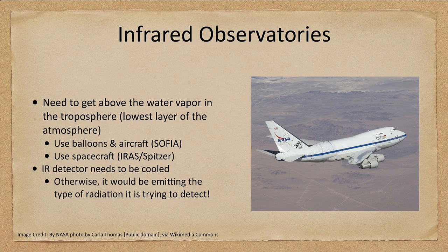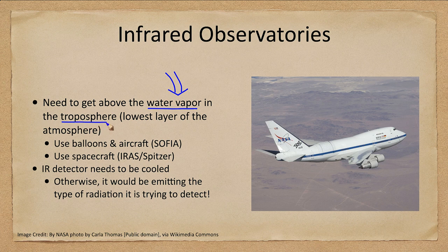Let's look at some infrared observatories. To observe in the infrared, we need to get above water vapor, which is very good at absorbing infrared light. So we need to get above the troposphere, the lowest layer of the atmosphere. This can be done using balloons and aircraft such as SOFIA pictured here, which flies high up in the atmosphere to observe infrared light above that water vapor.